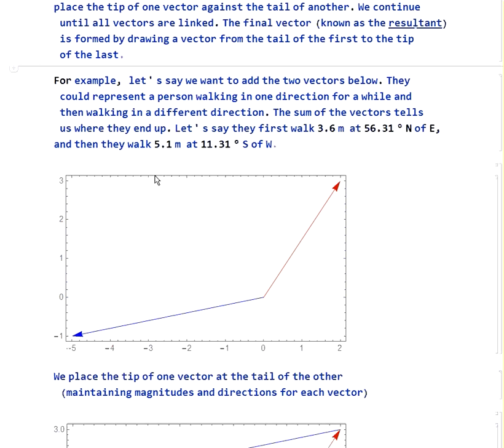For example, let's say we want to add these two vectors below. These are two different directions someone might walk, and we want to find out where do they end up if they do one and then the other. The first one here, the red one, is 3.6 meters at 56.31 degrees north of east. That's the way we ordinarily measure these vectors. Then we walk 5.1 meters at 11.31 degrees south of west.